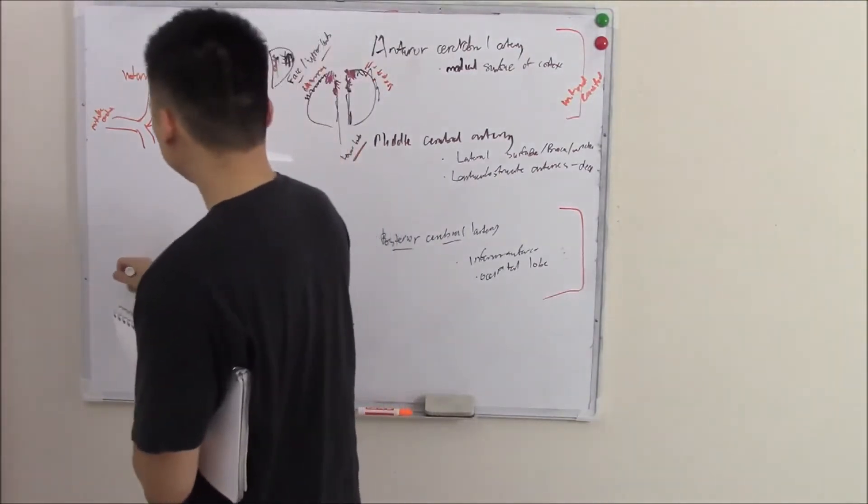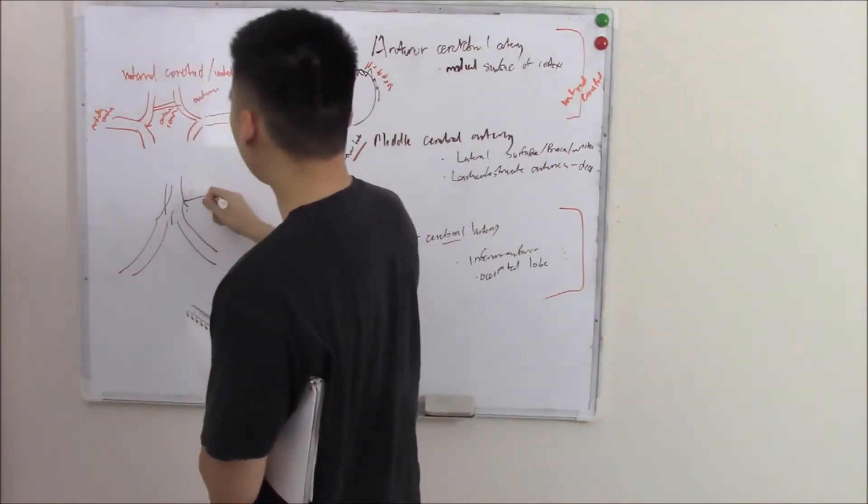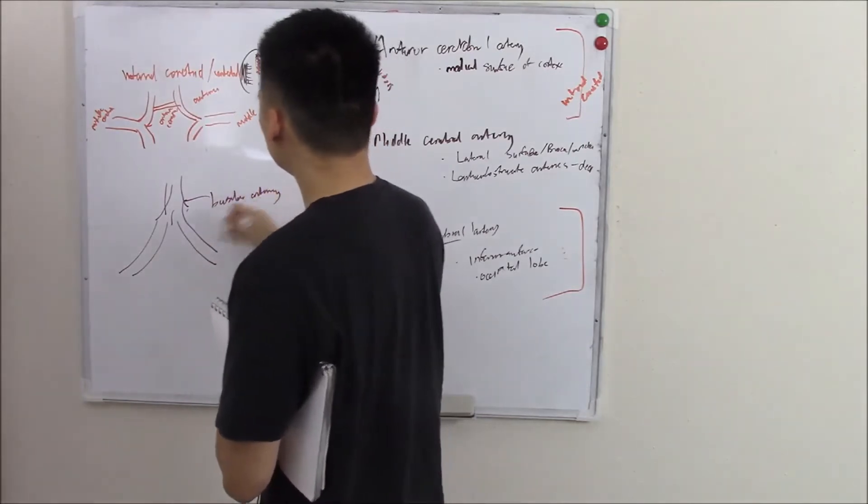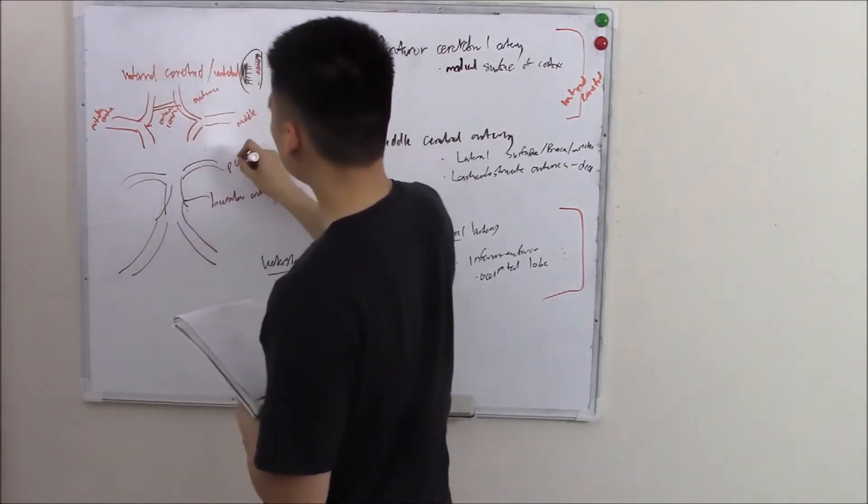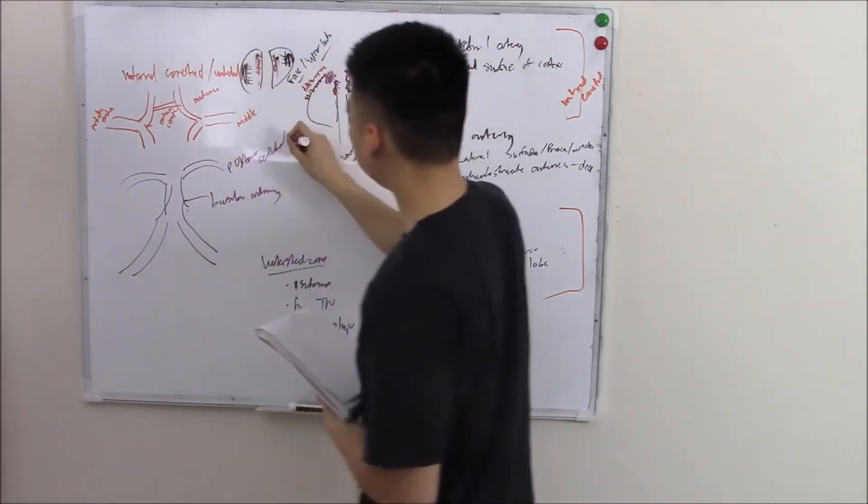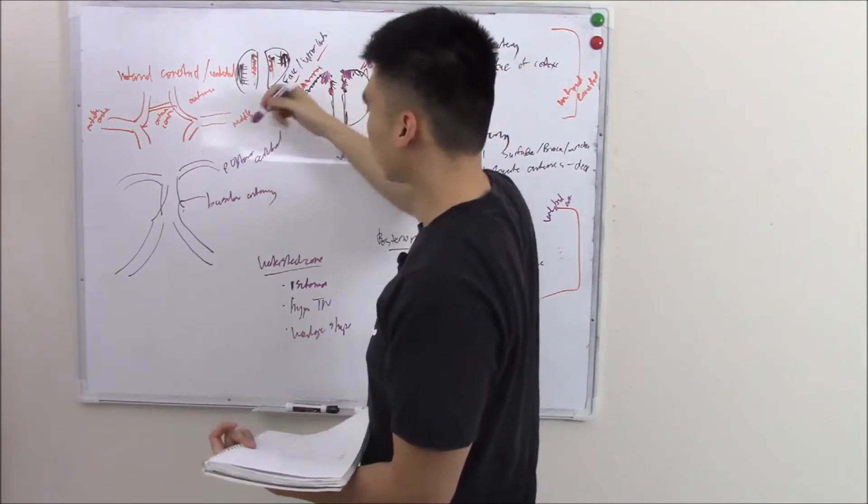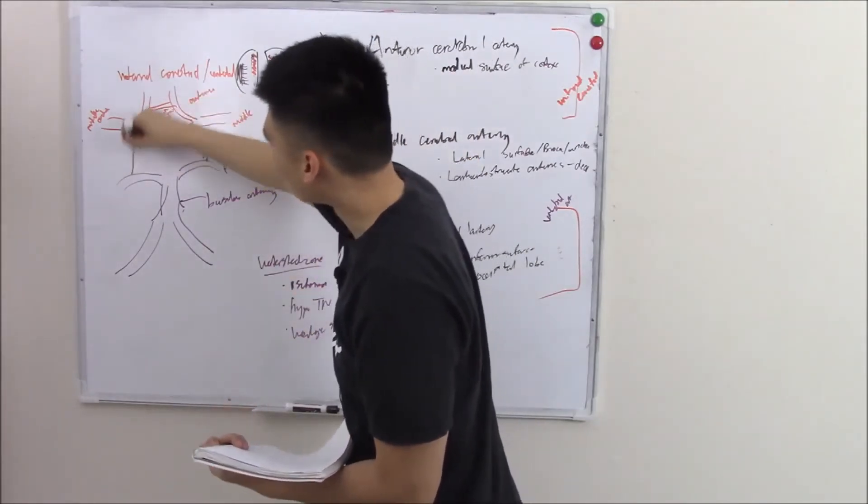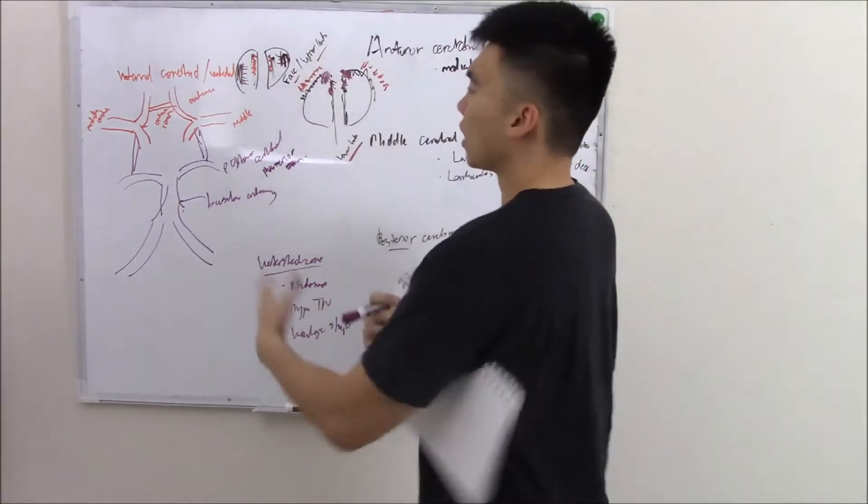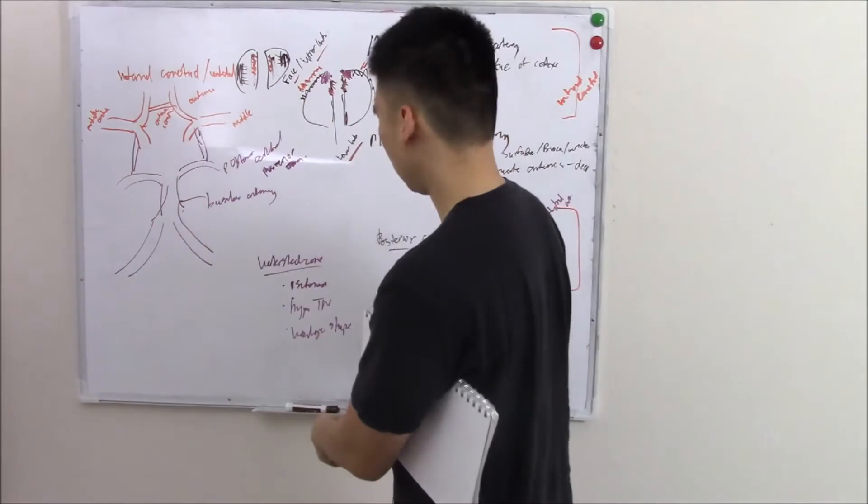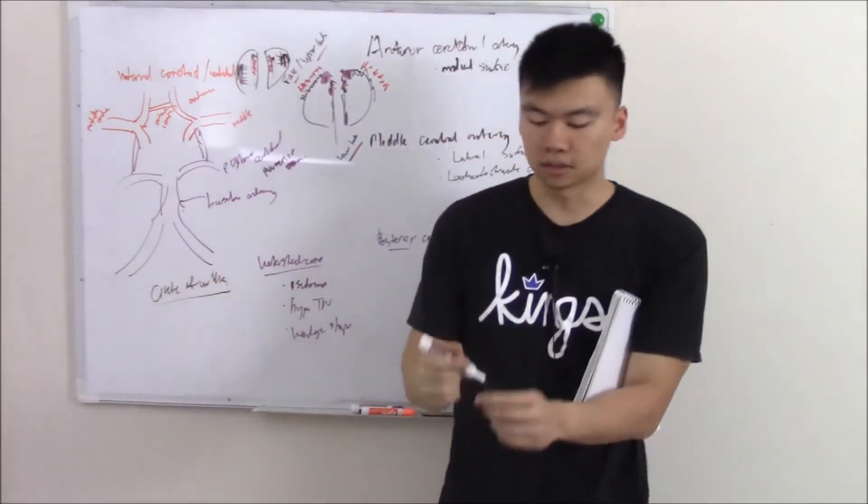So your vertebral arteries come out a little bit lower. And they will fuse together to form your basilar artery. And from this basilar artery, it'll branch off and make your posterior cerebral. So this comes from your vertebral artery. And there's a small artery that communicates between the posterior cerebral and the rest of the structure. We call this the posterior communicating artery. And when you bring them all together, it forms this kind of circle. We call all of this the circle of Willis. And that is how you supply your brain.